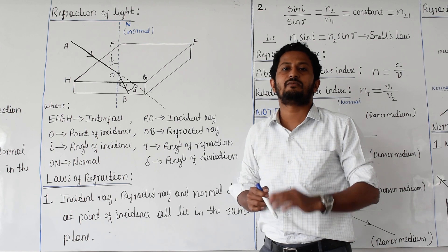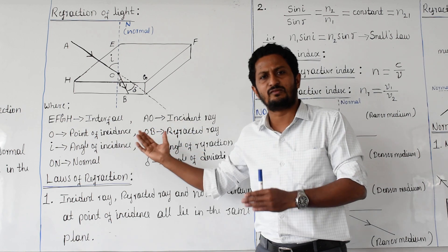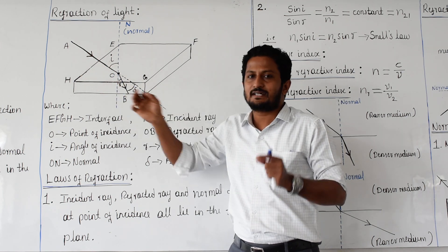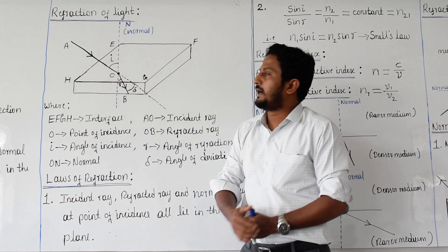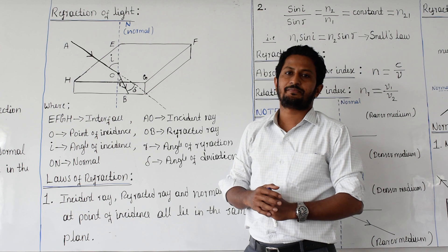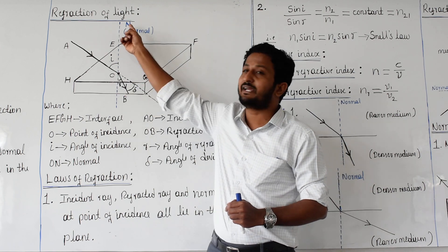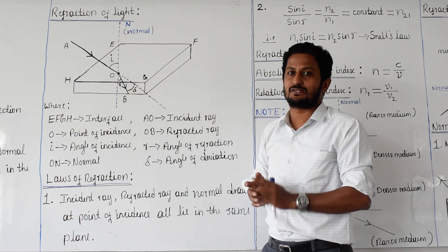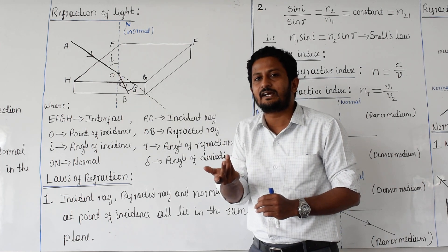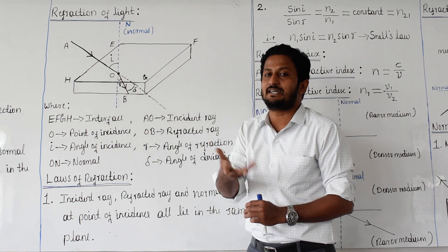This phenomenon we call refraction of light. We call AO the incident light ray, and O is the point of incidence. ON is the normal — a perpendicular drawn at the point of incidence. OB is the refracted light ray.